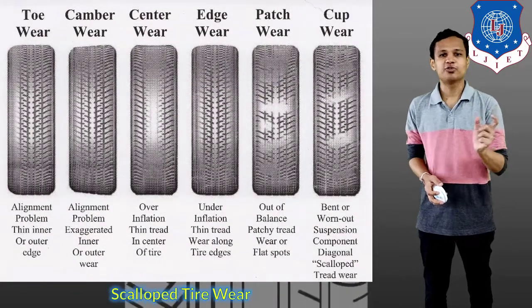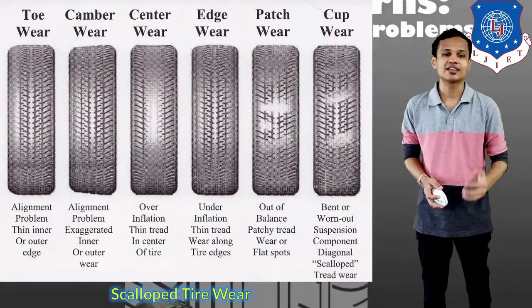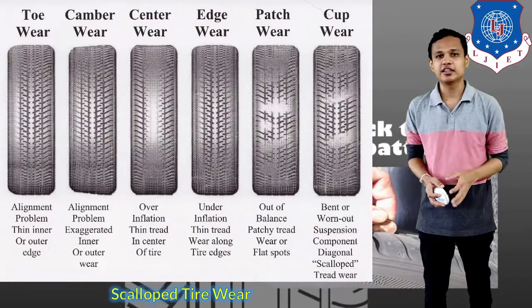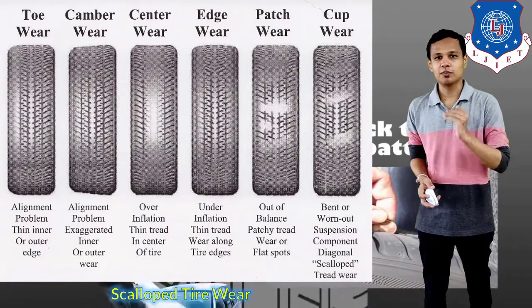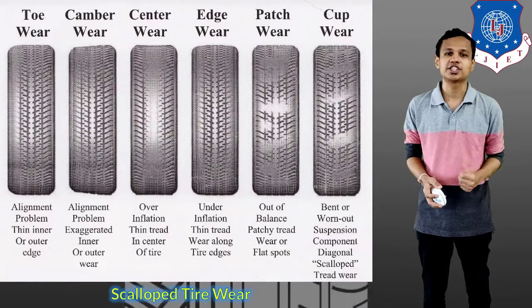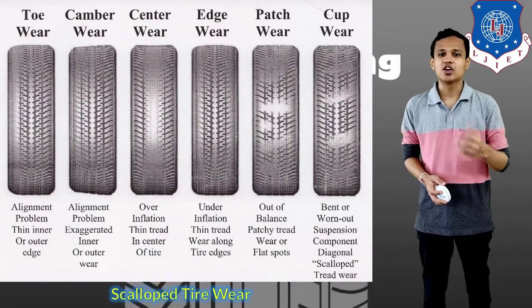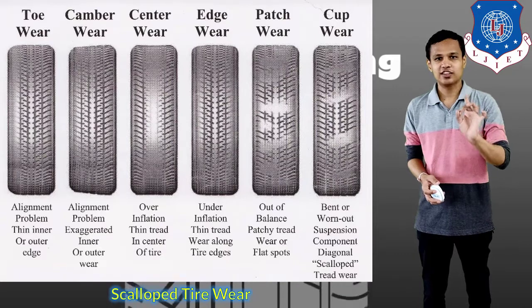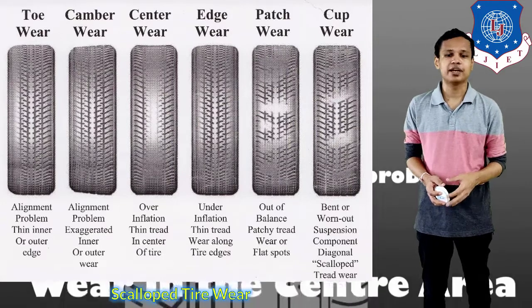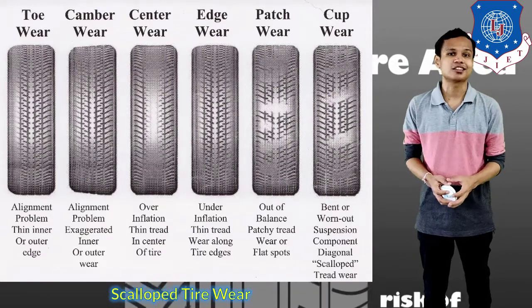In the figure you can see the different types of wear that show us problems with the suspension system. The first is toe wear, the second is camber wear, and the third is center wear. Toe wear happens because of incorrect toe setting. Camber wear is also part of the suspension and steering system. Center wear occurs because of over-inflation, edge wear because of under-inflation, patch wear happens because of road conditions, and top wear can happen because of worn suspension components — this last type of wear shows a problem in the suspension system.